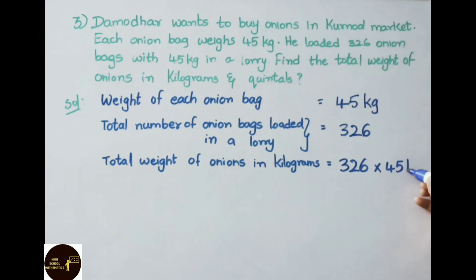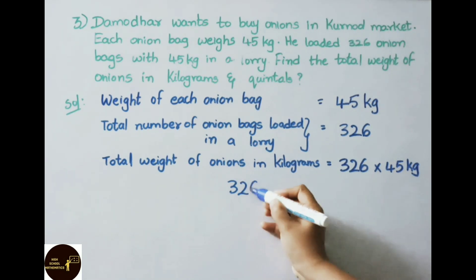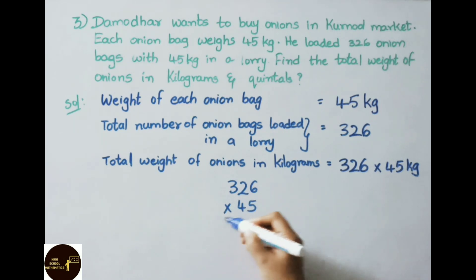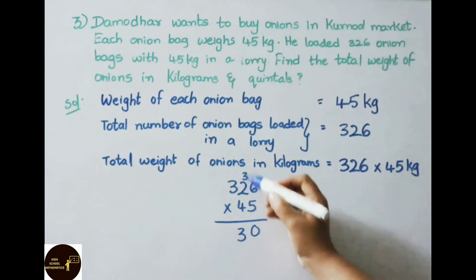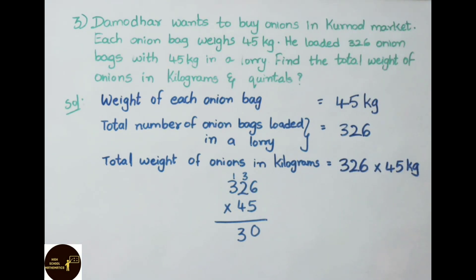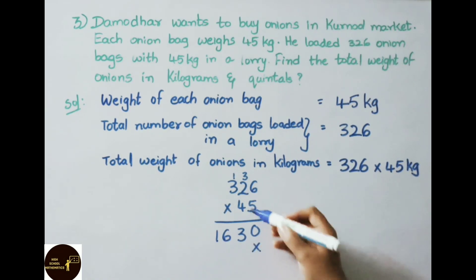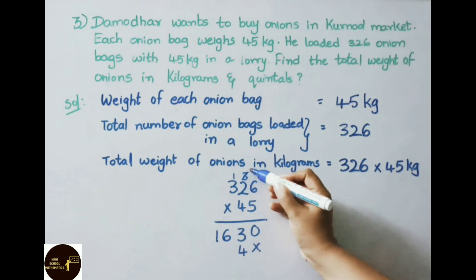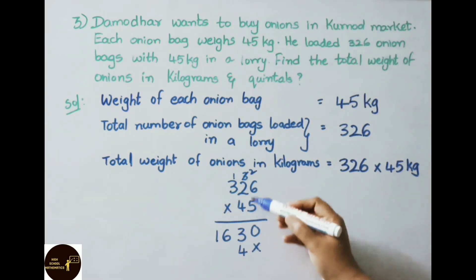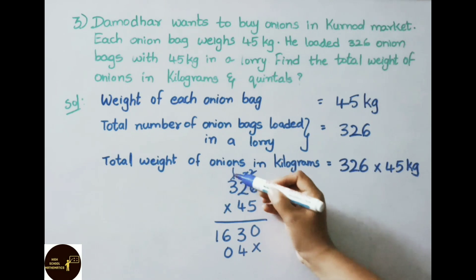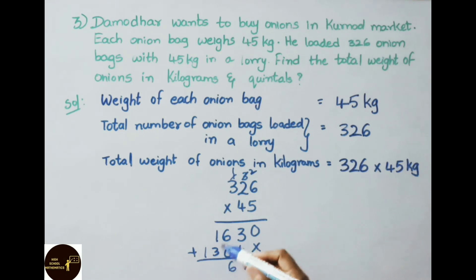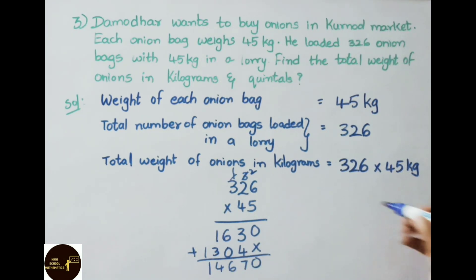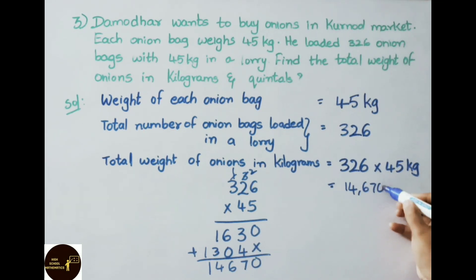Let us multiply 326 by 45. Multiplying by 5: 5 times 6 is 30, write 0 carry 3; 5 times 2 is 10 plus 3 is 13, write 3 carry 1; 5 times 3 is 15 plus 1 is 16. Multiplying by 4: 4 times 6 is 24, write 4 carry 2; 4 times 2 is 8 plus 2 is 10, write 0 carry 1; 4 times 3 is 12 plus 1 is 13. Adding the results, the total weight is 14,670 kg.